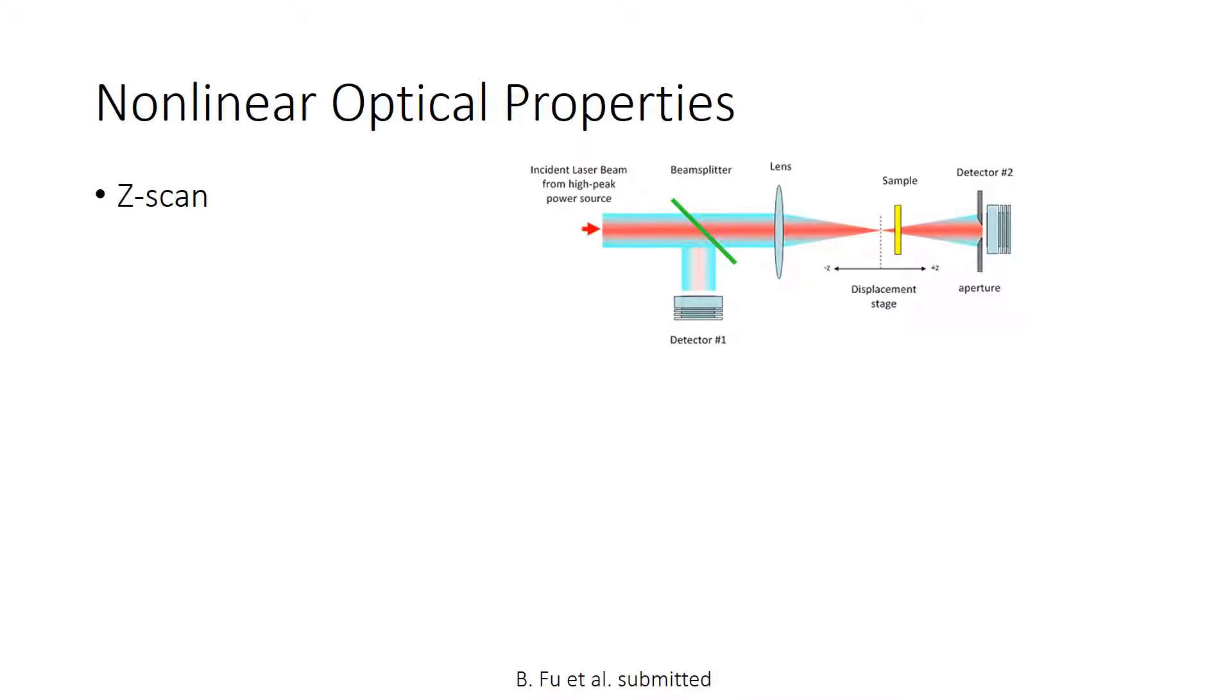In this way, the sample experiences a higher and higher energy by getting closer to the focus. And by measuring the amount of transmitted radiation as a function of the Z-position, we get a sort of power-dependent measurement.